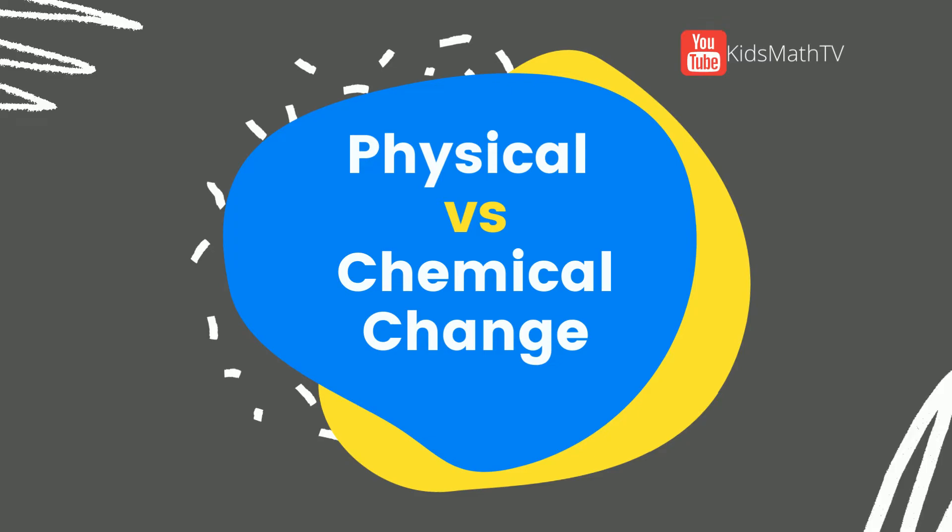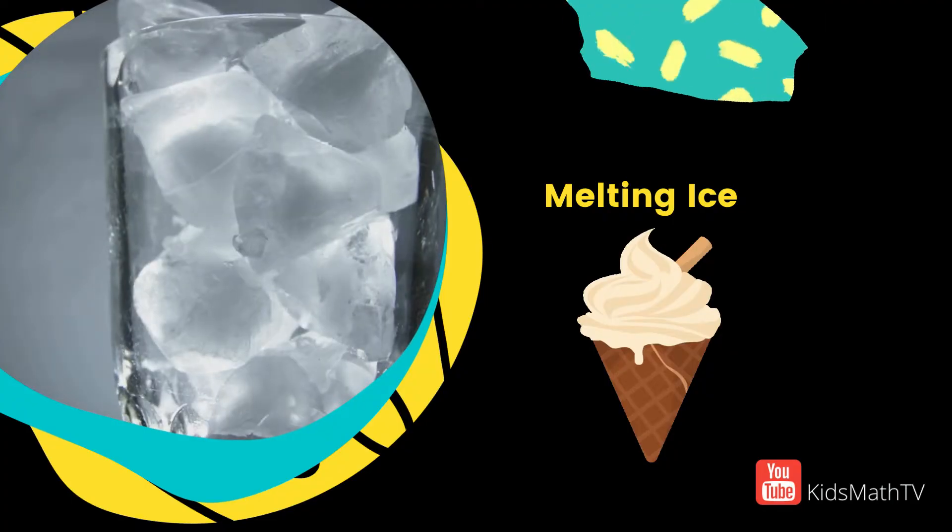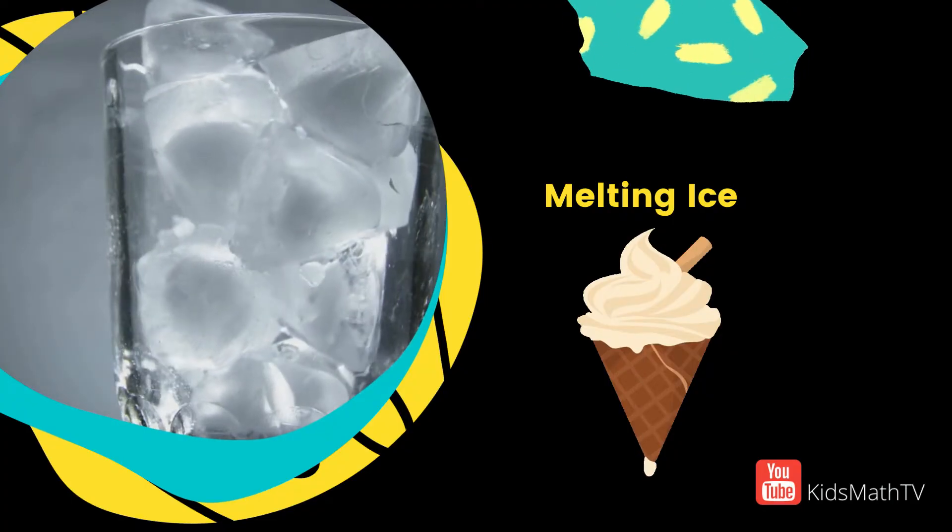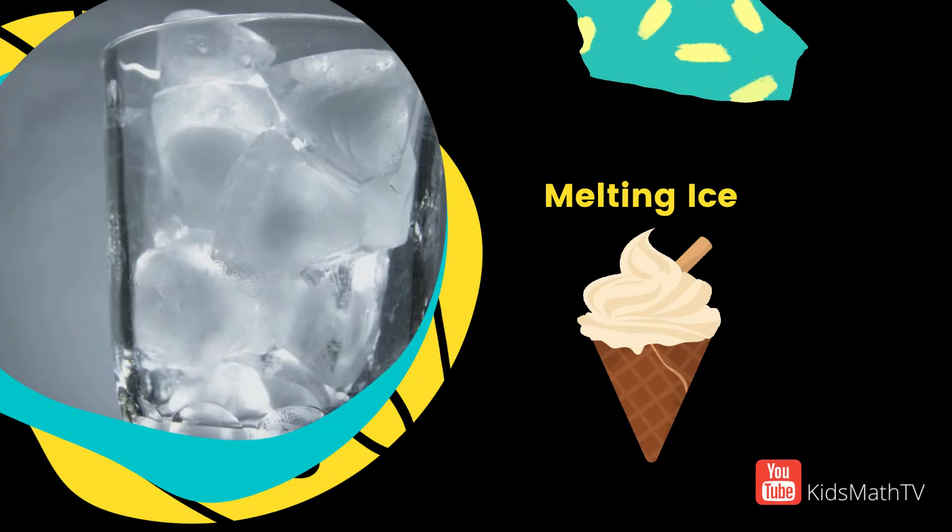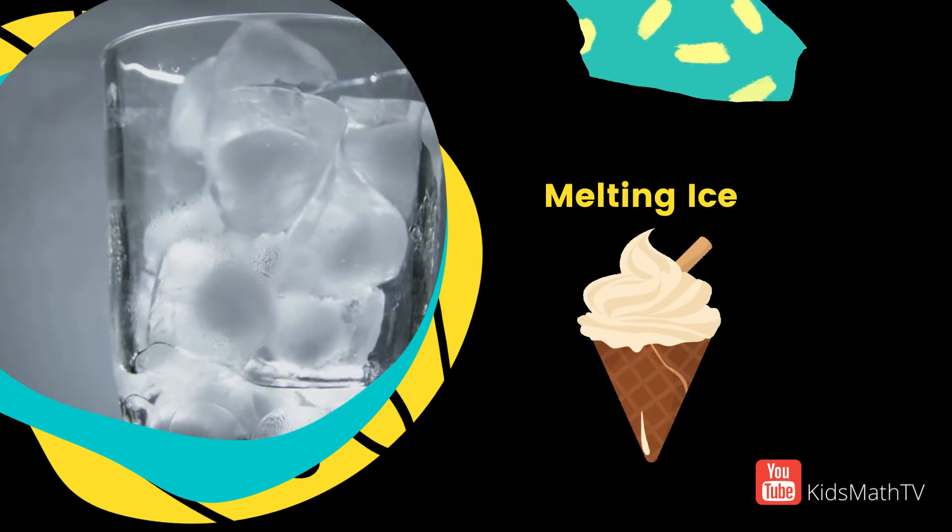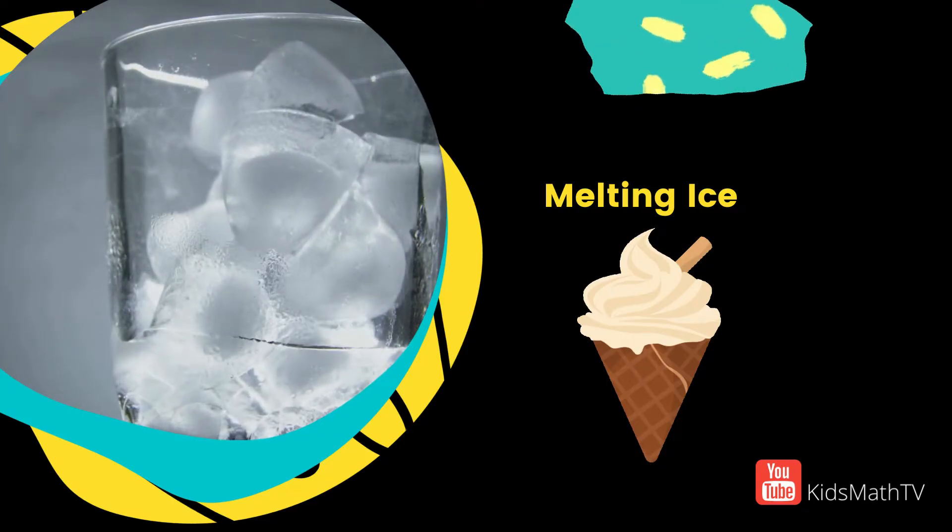Physical and Chemical Changes Lesson for Kids. What makes a melting cube of ice different from burning wood or leaving an iron nail to rust? In all three examples, the objects change in one way or another.